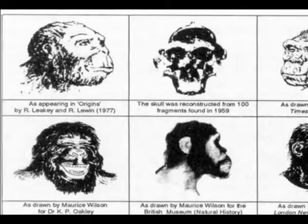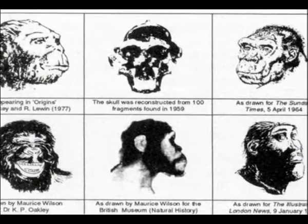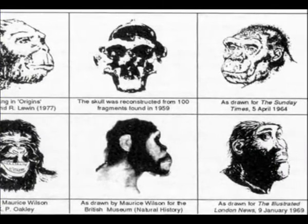As a matter of fact, evolutionists invent such preposterous stories that they even ascribe different faces to the same skull. For example, three different reconstructed drawings made for the fossil named Australopithecus robustus are a famous example of such forgery. Here we see three different reconstructions based on the same skull.